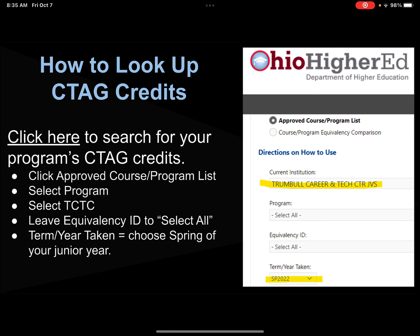You can also look up your C-Tag credits on the Ohio Higher Ed website — I've linked it here on this slide. You'll select your program, you'll select TCTC, and leave the field that says equivalency ID set to select all. For the date and the year taken, I would suggest leaving that set to spring of your junior year, then click search, and it'll show you all the C-Tag credits that are available for your program in its pathway.